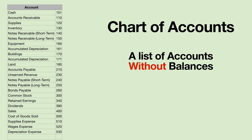There is usually some logic to the way we've numbered the accounts. In this example, all of the account numbers that start with 1 are asset accounts, the accounts that start with 2 are liability accounts, the equities start with 3, the revenues start with 4, and the expenses start with 5.